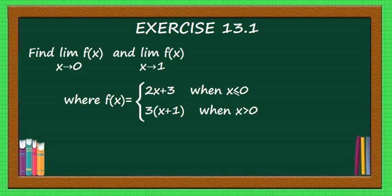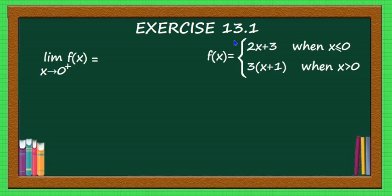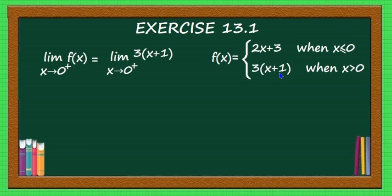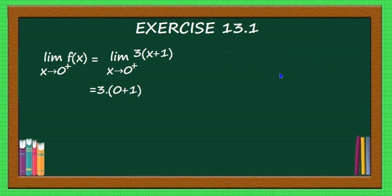To find the limit of this function, you have to find the limit as x tends to 0 plus and 0 minus. First, let us find limit extending to 0 plus of f(x). Here x tends to 0 plus means it is positive, it is greater than 0. Therefore, you have to take 3 into x plus 1 as the function. That is equal to limit extending to 0 plus of 3 into x plus 1. Put x equal to 0: we will have 3 into 0 plus 1, that is equal to 3.